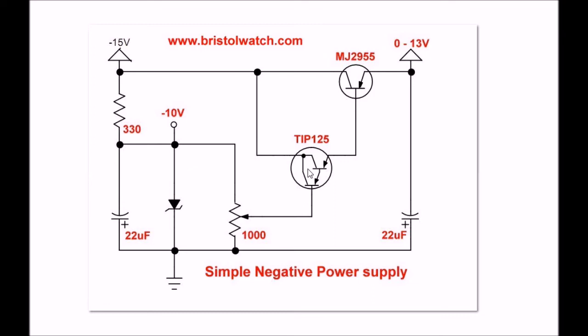If all you want is up to 4 amps, you can leave out the 2955 and use the TIP125 by itself. Make sure you heat sink it. Because if you try drawing 3 or 4 amps through this Darlington, it will get hot.